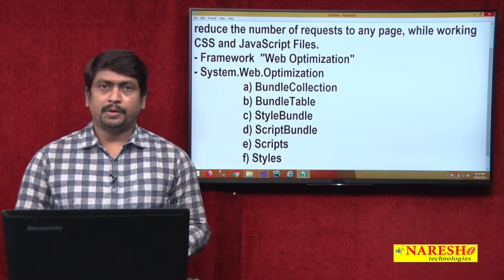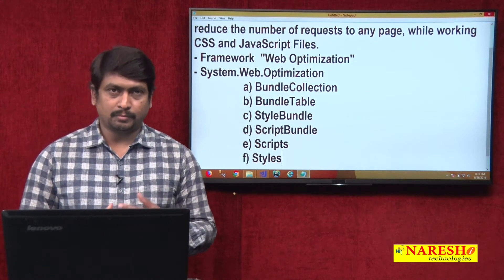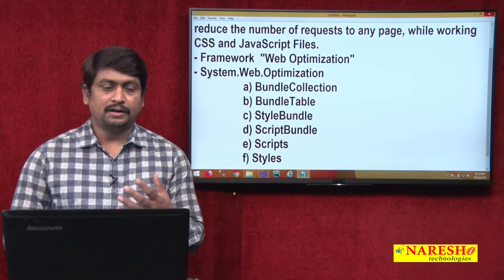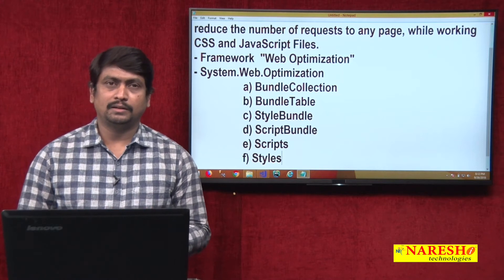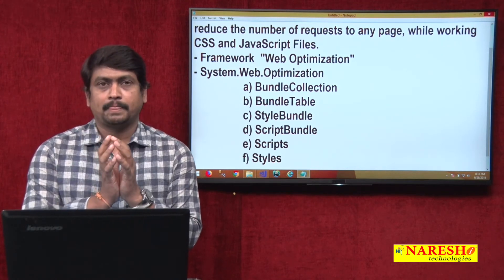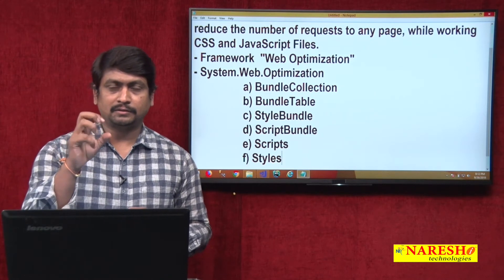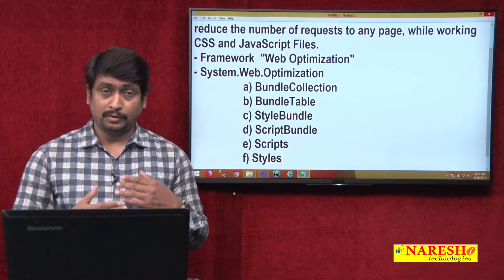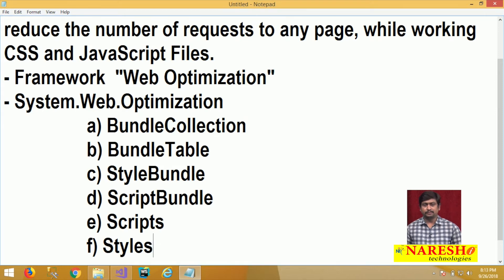System.Web.Optimization provides a set of classes responsible for configuring and accessing the bundles. The main concept of a bundle is that we can group all CSS and JavaScript files — or their references — into a virtual bundle, so that the request will come to the bundle and the response will be from all the files in the bundle. The request will be one, and the response will come from many files. We need to know about these classes in order to configure and handle bundles.